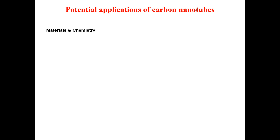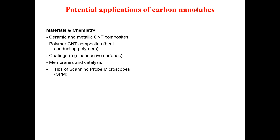Potential applications of carbon nanotubes include many different fields. In materials and chemistry, you can utilize CNTs as composites, ceramic, and metallic substances. If you need a heat-conducting polymer, it can be utilized as a CNT composite. For conductive surfaces, you can use CNTs as a coating, as a membrane in catalysis, and as a tip in scanning probe microscopy.